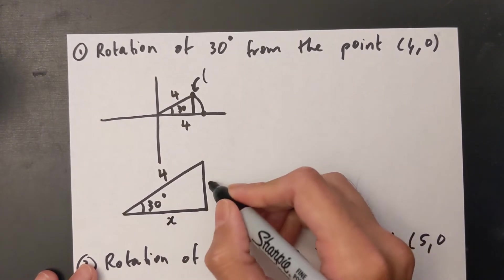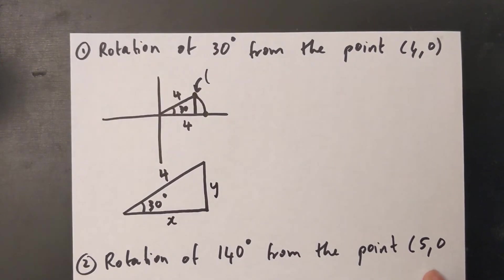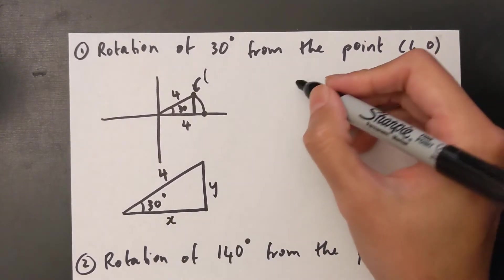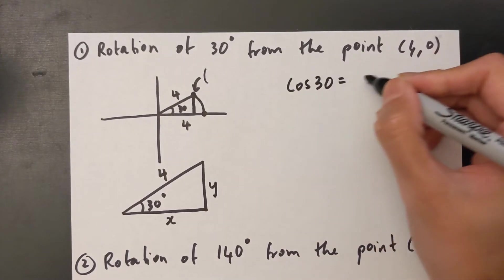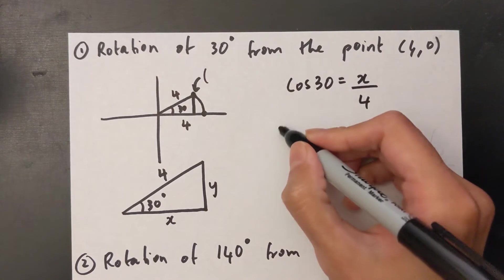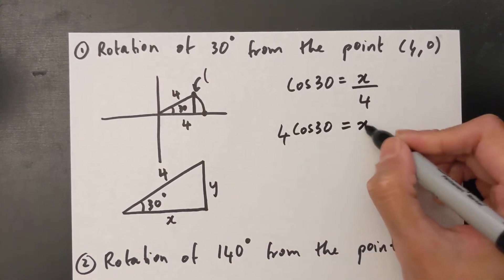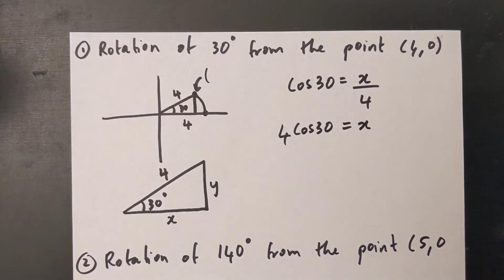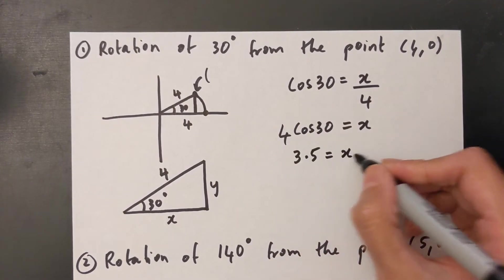I'm going to call this X and I'm going to call this Y, and now I'm going to use SOHCAHTOA to find this. Okay, so cos 30° equals X over 4. 4 cos 30° equals X, and if I put that in my calculator I get 3.5 equals X.